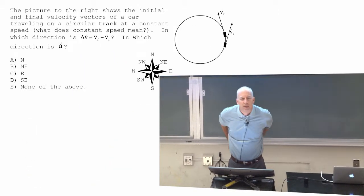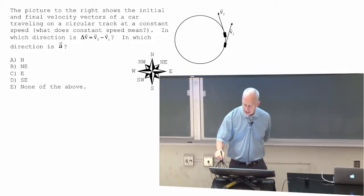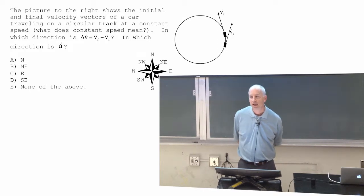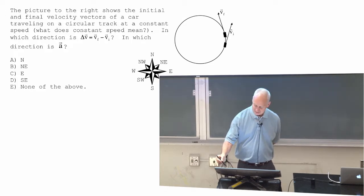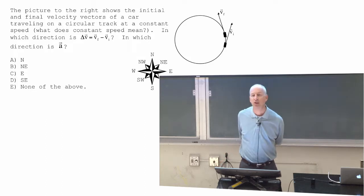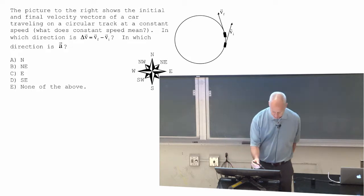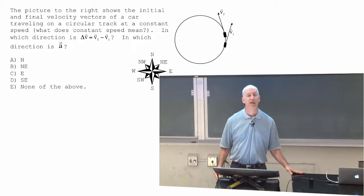You've answered this one before. If the car is going around in a circle at a constant speed, you answered this for delta V. You took V final, subtracted V initial, and found a delta V that points toward the center of the circle. If I ask about the acceleration vector direction — remember, acceleration is just delta V over delta T, the time rate of change — so the acceleration vector points toward the center of the circle.